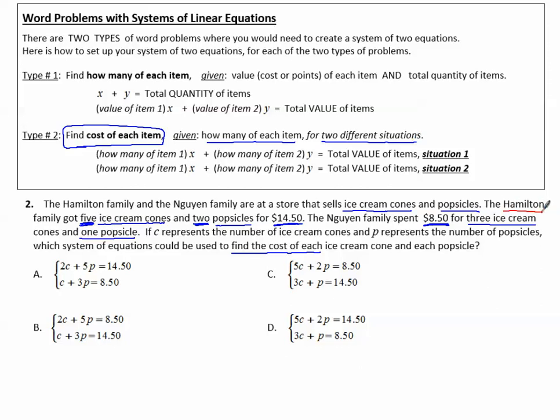The Hamilton family is the first situation. We've got five of the ice cream cones. So that would be 5C and two of the popsicles for a total of that much money, $14.50.